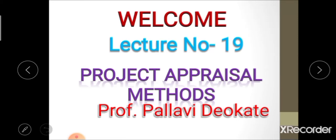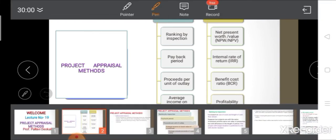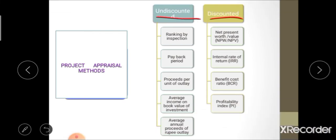In this lecture, we are going to learn different types of project appraisal methods — specifically discounted methods and undiscounted measures of project appraisal. Today's lecture focuses mainly on undiscounted measures. In undiscounted methods, the time value of money is not considered during calculation, whereas in discounted measures, the time value of money is considered.